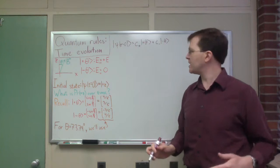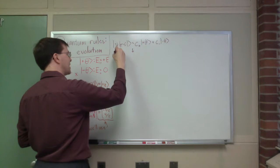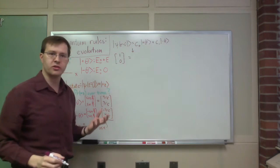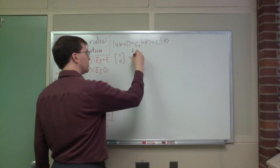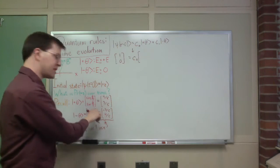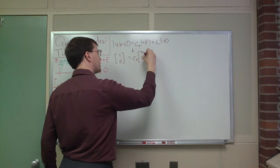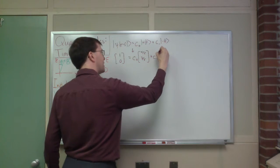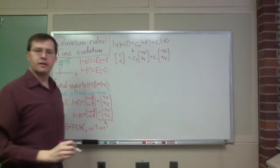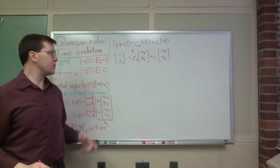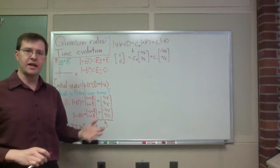Let me write that out in terms of our vector representation. The plus z state is just the column vector (1, 0), because that's the basis we've chosen to represent our spin vectors. So that's going to equal c-plus times (4/5, 3/5) plus c-minus times (-3/5, 4/5). This is a system of two equations and two unknowns — you can solve for c-plus and c-minus. You could even do it for arbitrary theta.